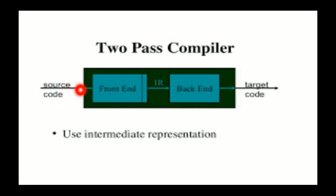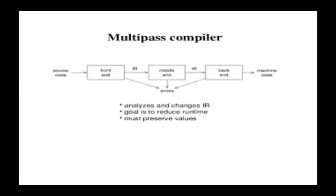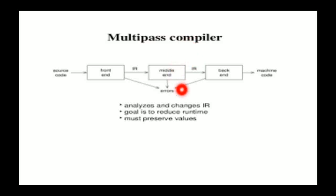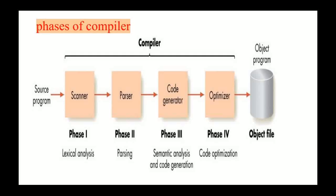That intermediate code is then converted into another intermediate code, and this second intermediate code is finally converted into the target machine code.